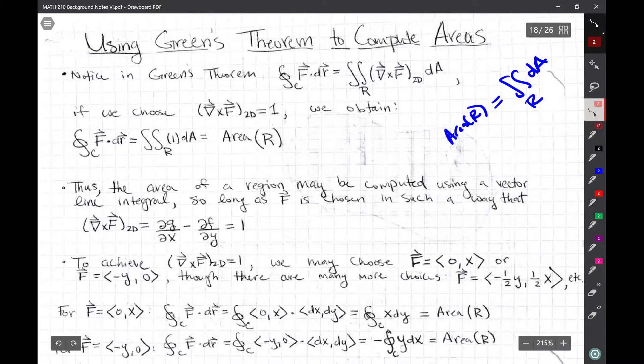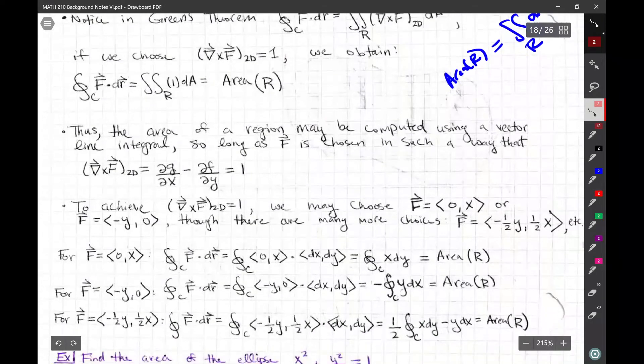Notice we needed one in there. And so any vector field such that the curl, the 2D curl equals one, and of course, we're using the circulation form of Green's theorem here. So we'll get this result that the line integral around the closed curve C is equal to the double integral, where R is bounded by C, C is the boundary of R, is equal to the area of R. And that's how you could compute an area using a line integral.